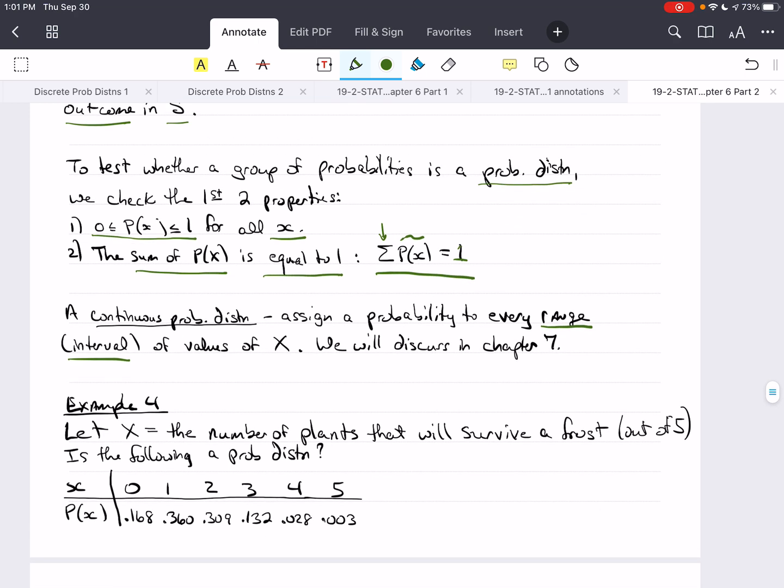Let's do an example of a discrete probability distribution. Let X equal the number of plants that will survive a frost out of 5 total. Is the following a probability distribution? We have 0 through 5, so we could have 0 plants survive the frost, all of them could die, or just 1, 2, 3, 4, or 5 of them could survive. Now, all of the probabilities are between 0 and 1, so that's good. There are no negative values, no values above 1. And now, we add up the total, and we find when we put this into our calculator that we get exactly 1.000. So, yes, it is a probability distribution.